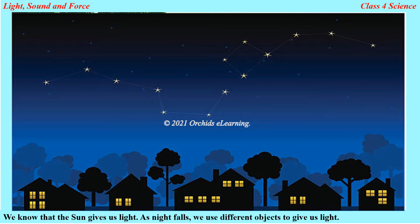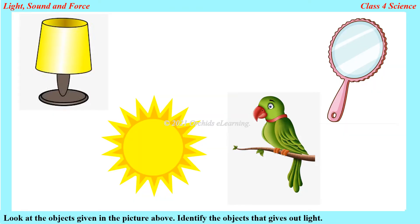Look at the objects given in the picture above and identify the objects that give out light. The objects that give us light are the lamp and the Sun.